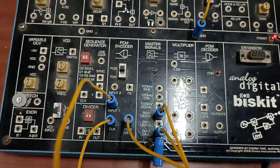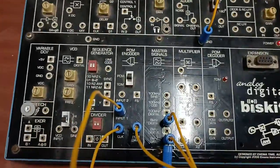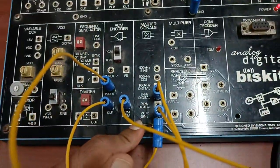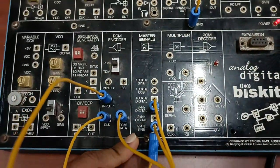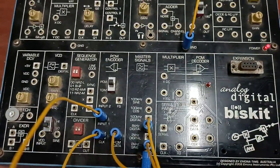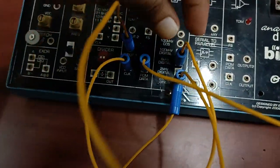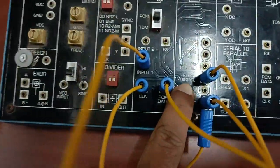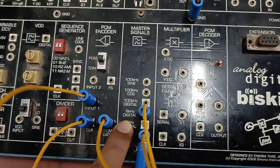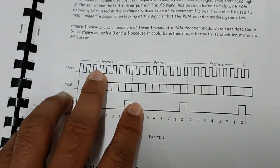PCM is a technique to convert the analog signal to digital signal or binary bits. We will take the analog signal, which is a 2 kHz signal from the master signal. Sampling is required in PCM, and I have taken the 8 kHz digital signal from the master signal block as the sampling clock.